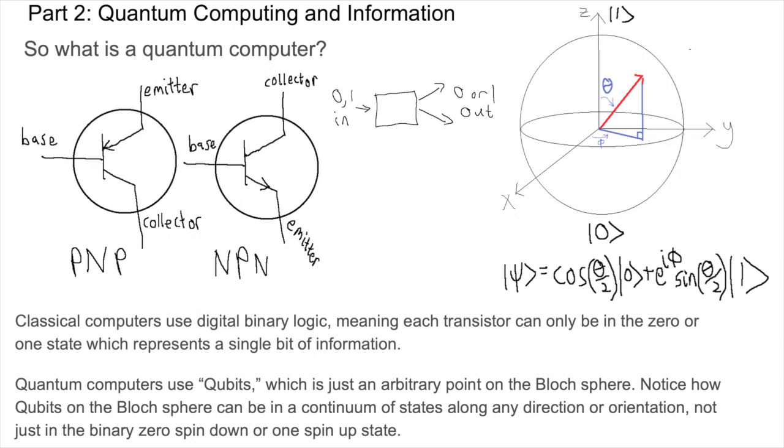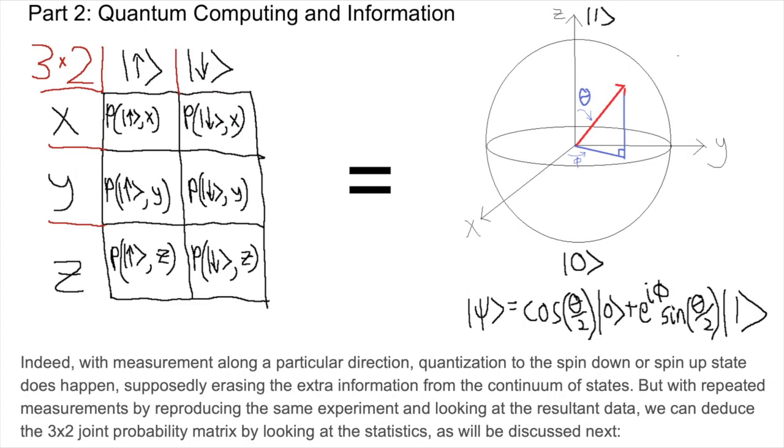Quantum computers, on the other hand, use qubits, which is just an arbitrary point on the Bloch sphere. Notice how qubits on the Bloch sphere can be in a continuum of states along any direction or orientation, not just in the binary zero spin down or one spin up state. Indeed, for a qubit with measurement along a particular direction, quantization to the spin down or spin up state does happen, supposedly erasing the extra information from the continuum of states. But with repeated measurements by reproducing the same probabilistic experiment and looking at the resultant data, we can deduce the 3 by 2 joint probability matrix by looking at the statistics, as will be discussed next.